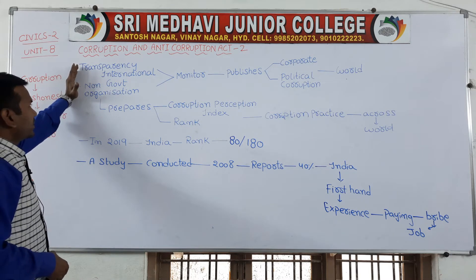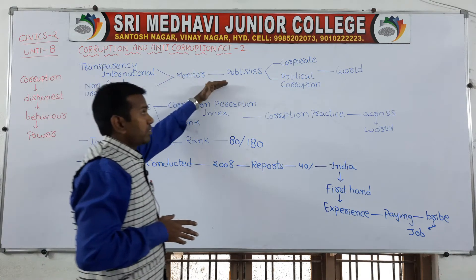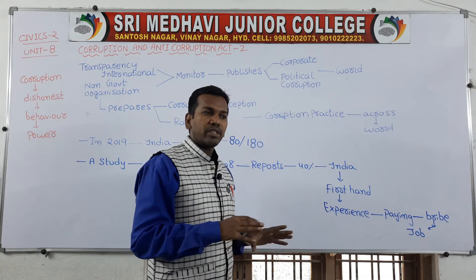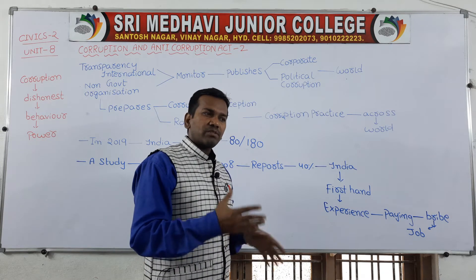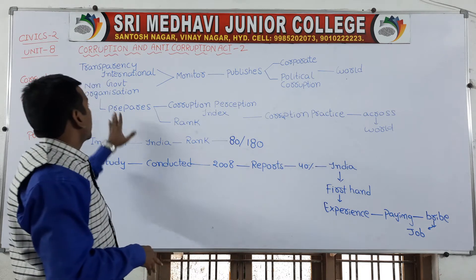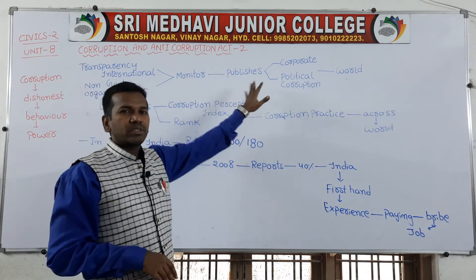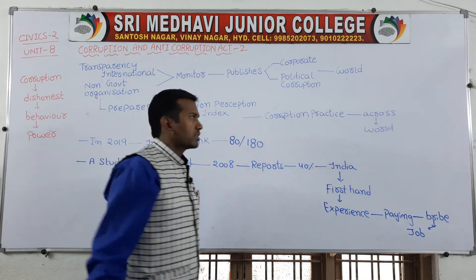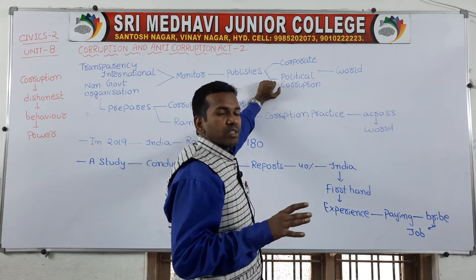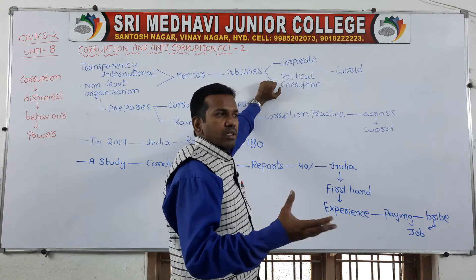Transparency International and non-government organizations monitor situations and publish reports on corporate and political corruptions all over the world. These are international-level organizations — NGOs — that are not government organizations. They monitor situations and publish about various corruptions worldwide, including both corporate corruption for profit and political corruption.